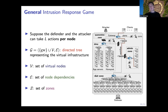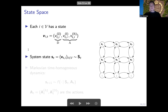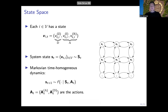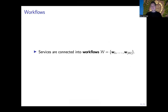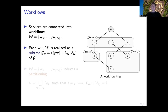Every node is part of exactly one zone, but that zone may change over time as a result of defensive actions. The state of each node is a vector with three components: the zone, the intrusion state, and the reconnaissance state. The complete system state is the concatenation of all of these node state vectors, which is dynamic and evolves over time according to a transition function f. The nodes run services that are connected into what we call workflows — an abstraction modeling a set of interdependent nodes, a typical example being a chain of microservices — and we capture these as subtrees of the infrastructure tree.